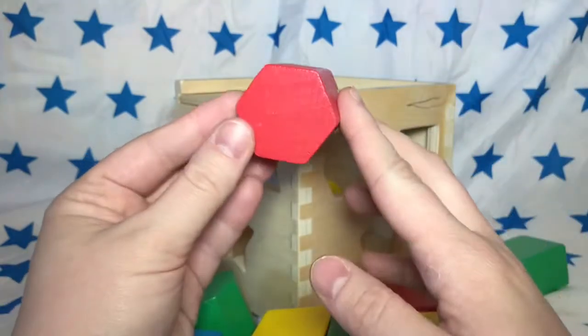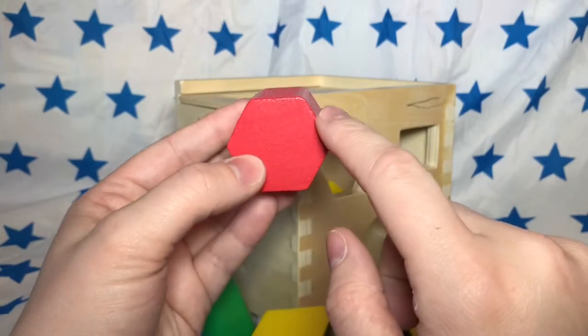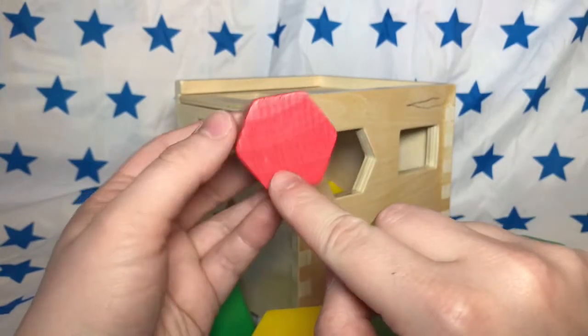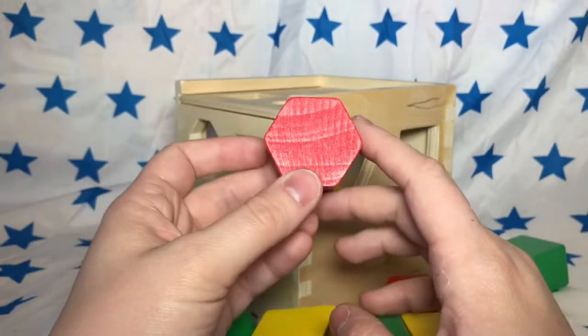This is a red hexagon. Hexagons have six sides. One, two, three, four, five, six. Now we have to find a shape that matches.